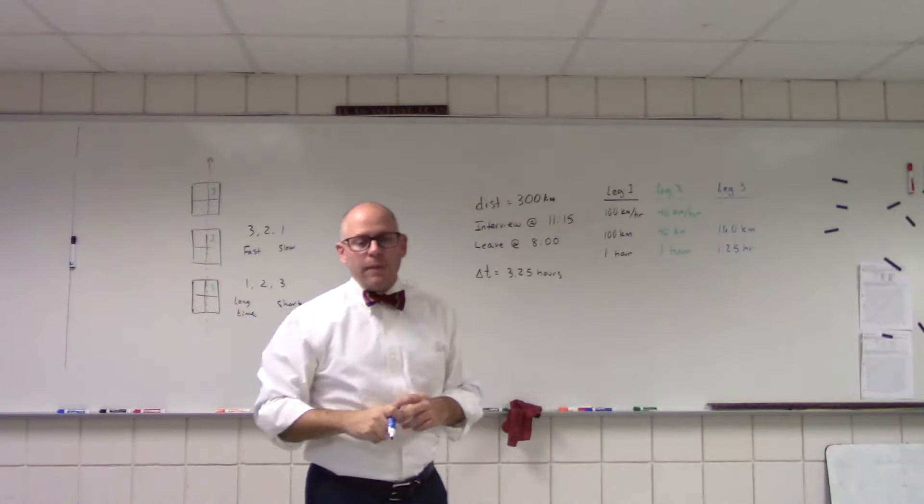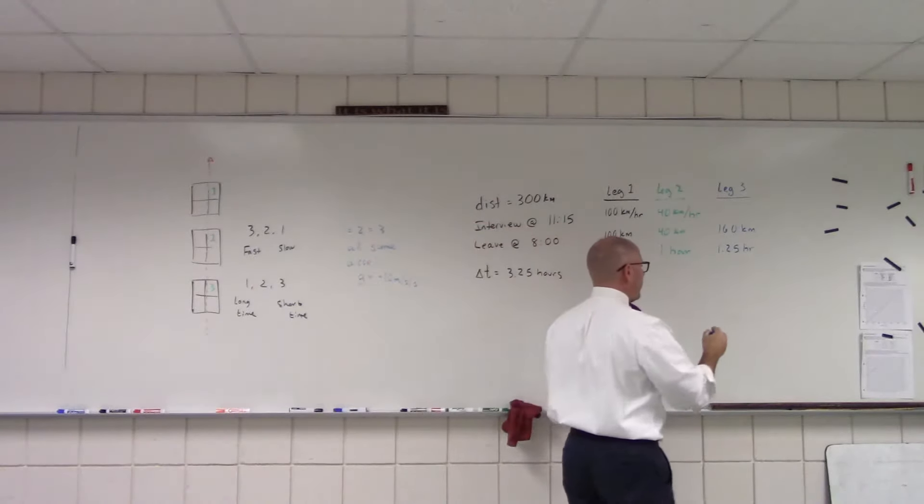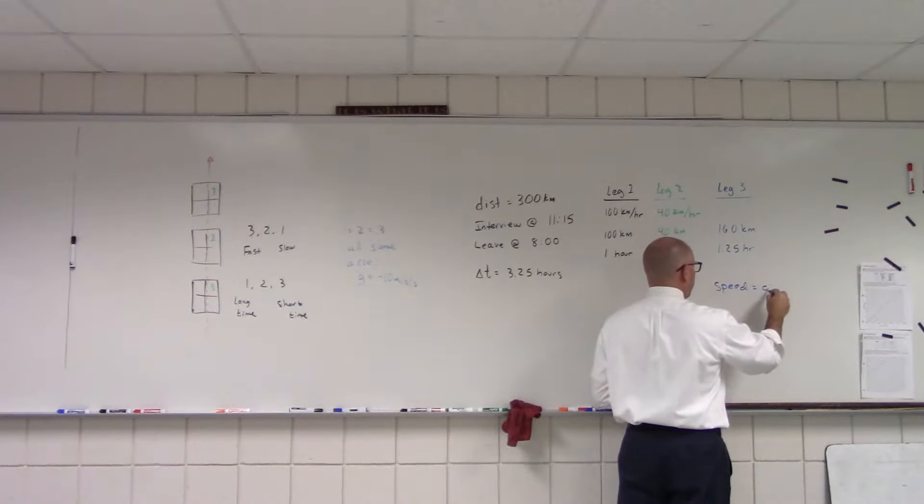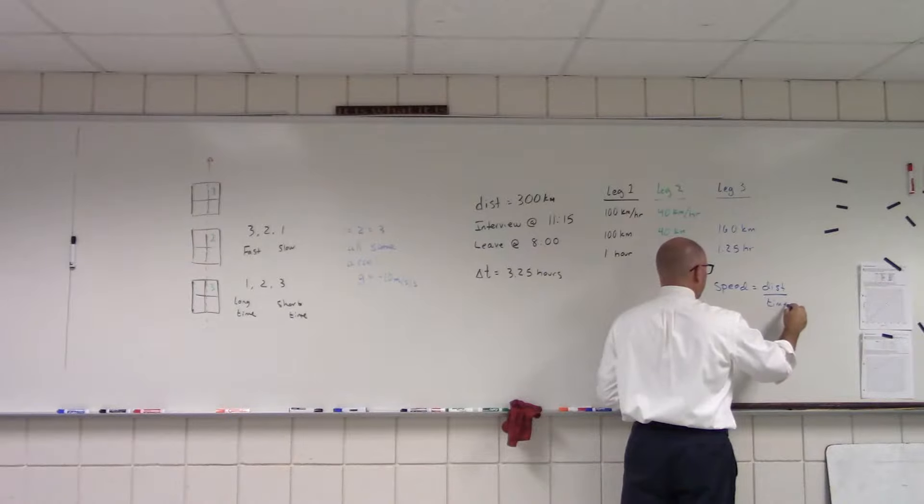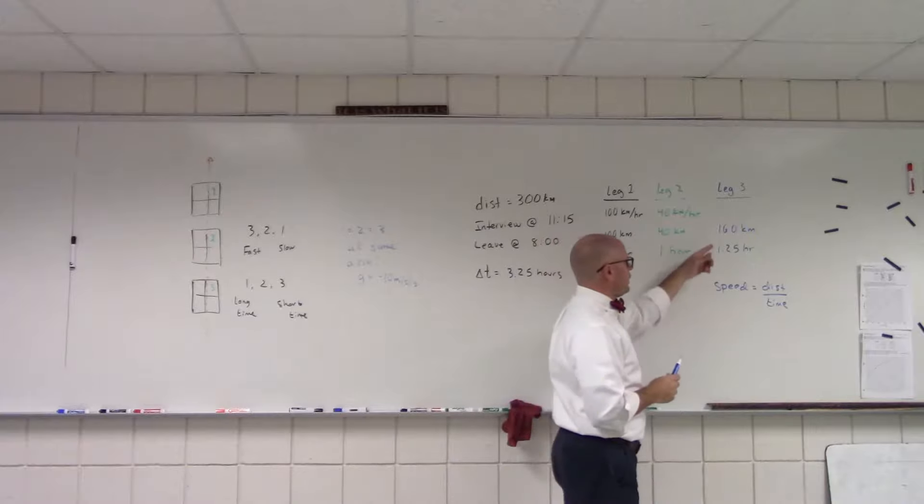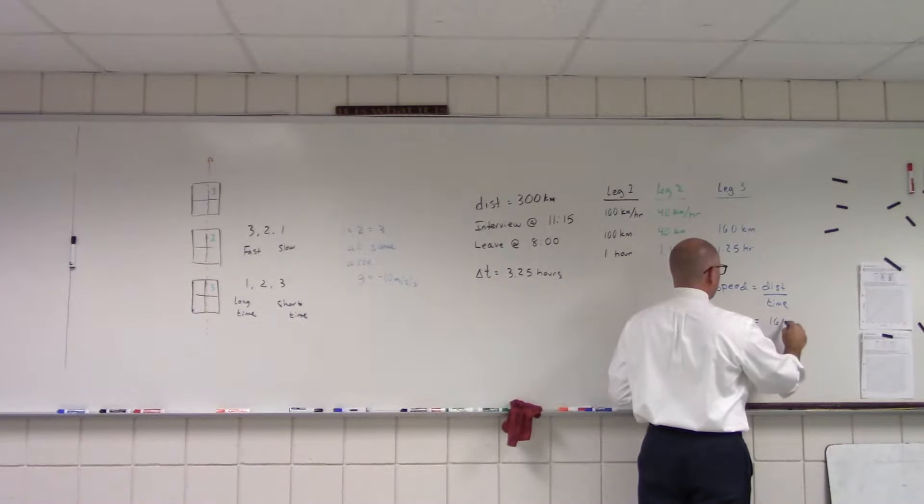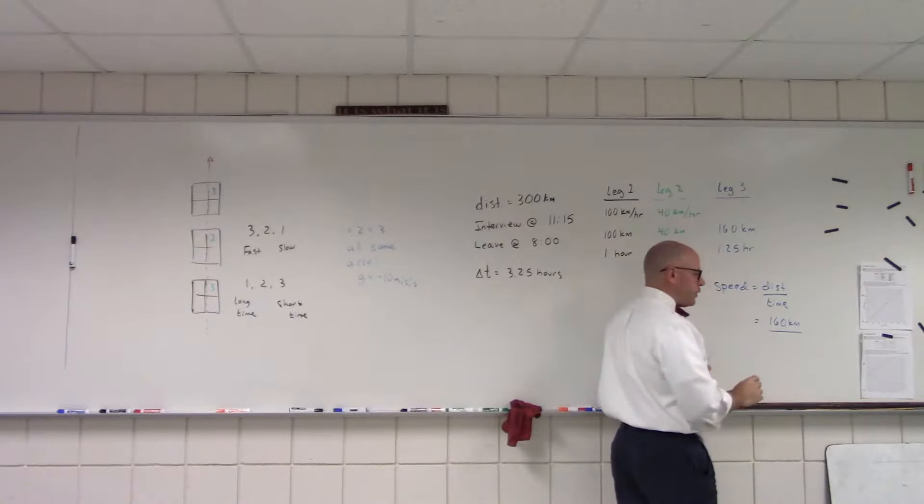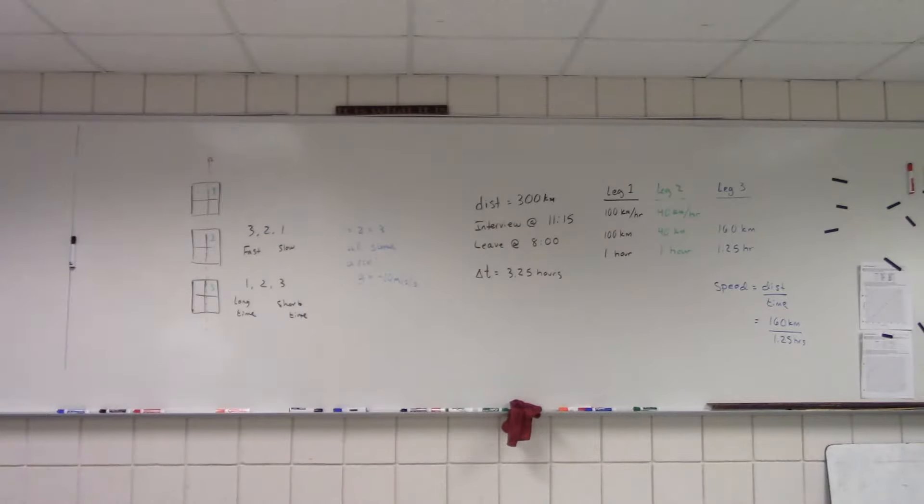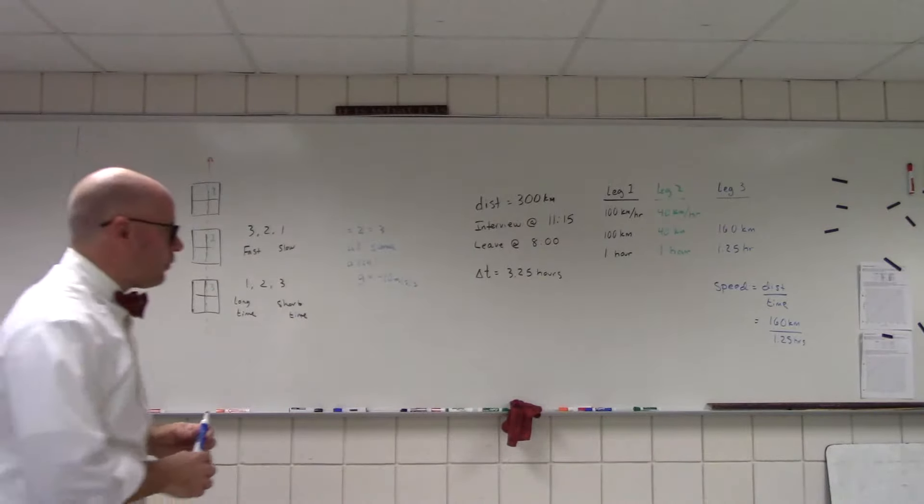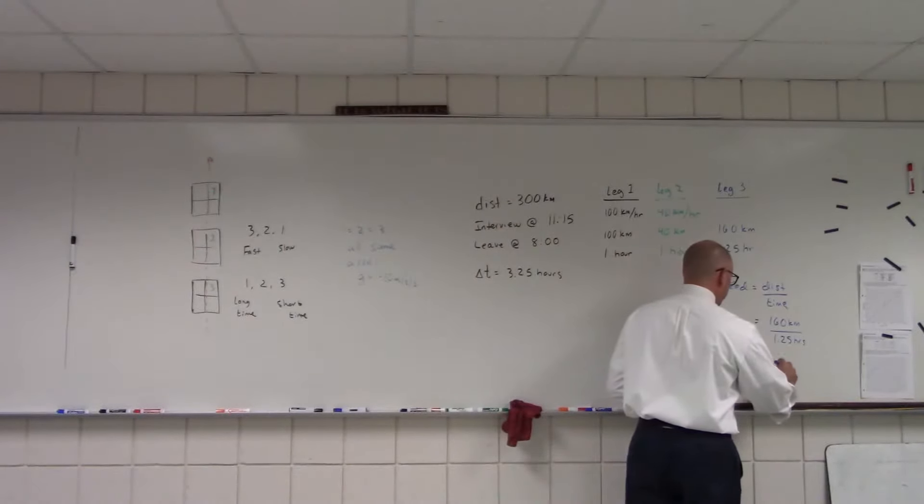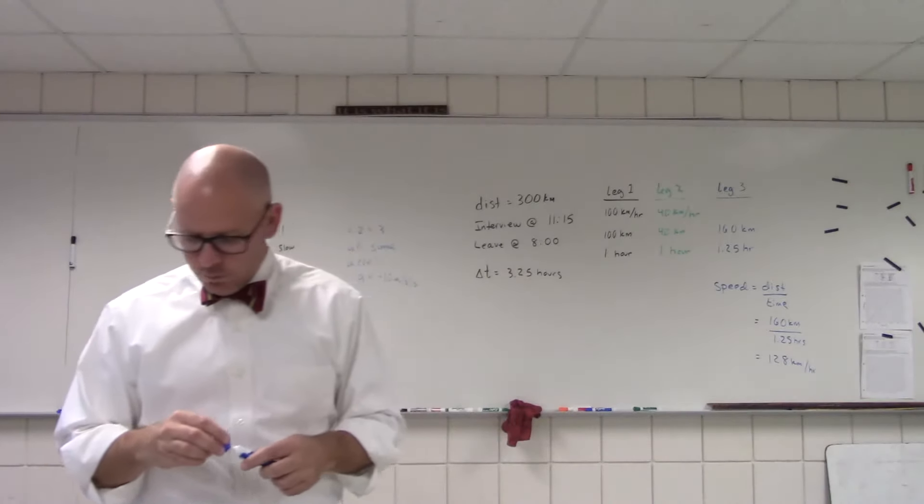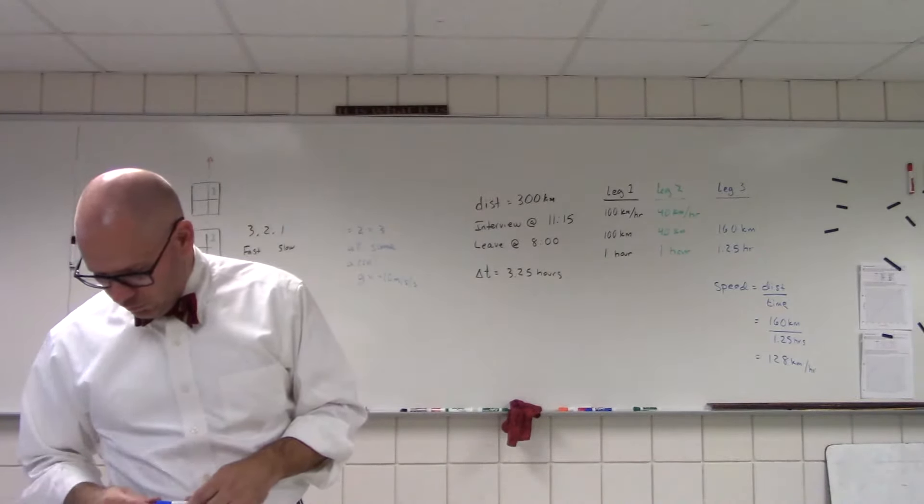We have 1.25 hours left, and because we're dealing with a constant speed situation, we can use our understanding that speed is equal to the distance traveled divided by the time. We know our distance we need to go is 160 kilometers. We've got to do it in 1.25 hours. So I've got 128 kilometers per hour, seems pretty straightforward.